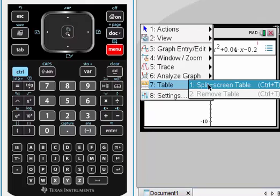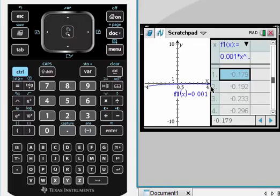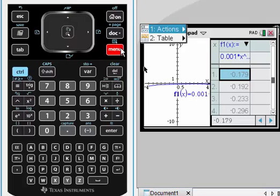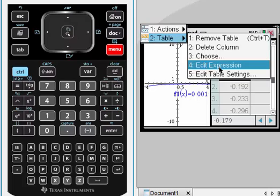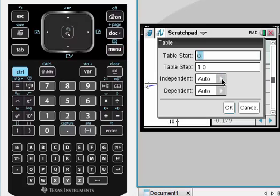Okay, as you can see, this is a table of values. The X values are automatically generated, but I'm going to change the settings. Table, table settings, and here I'm just going to make it Ask.